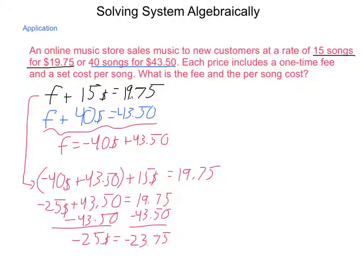That tells me -25s = -23.75. So dividing both of these by -25, I come out with s equaling 0.95. So each song under this plan costs 95 cents. And if each song costs 95 cents, what's our fee going to be?